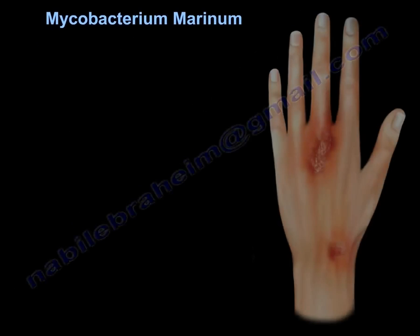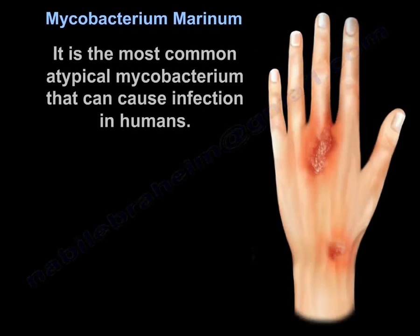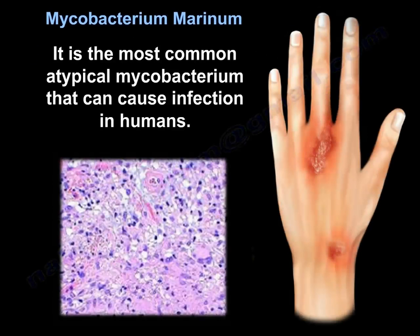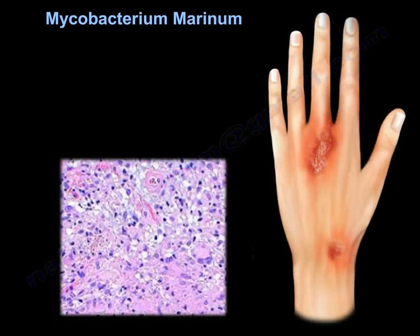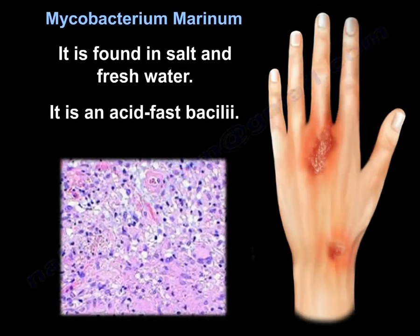Mycobacterium Marinum is the most common atypical mycobacterium that can cause infection in humans. It is found in salt and fresh water. It is an acid-fast bacilli.